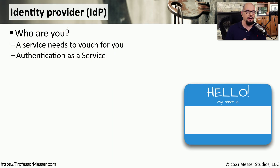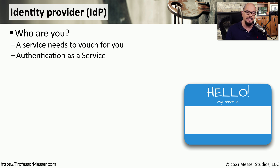When you have an application running on your local network, you probably have a pretty good idea of what users and devices will be accessing it. But if your application is running in the cloud, you may not have that level of visibility into exactly who's connecting. In those cases, you may want to control identities through the use of an identity provider, or IDP. This is a service that can vouch for who a person happens to be — think of it as authentication as a service, because a third party is providing this identity control.